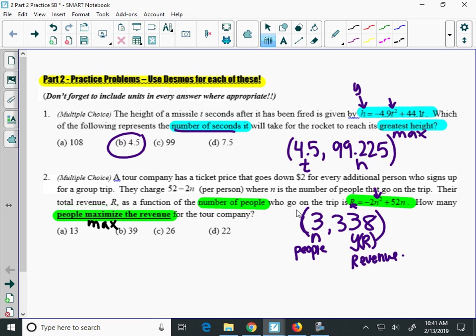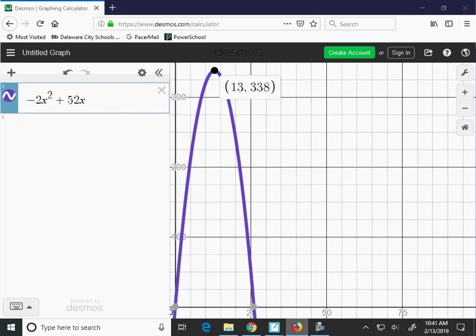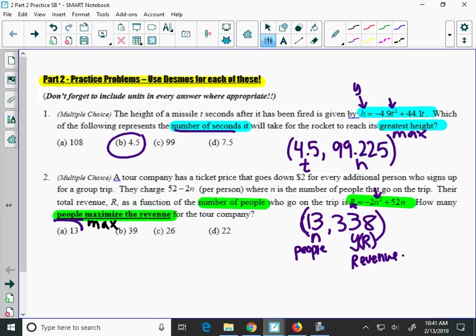This problem is asking you how many people maximize the revenue. So the number of people there would be 13. And I think I wrote that wrong. It would be, yep, 13 there. I forgot the one. So the number of people is 13, option A.